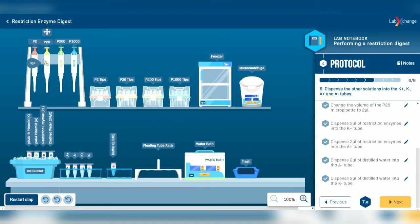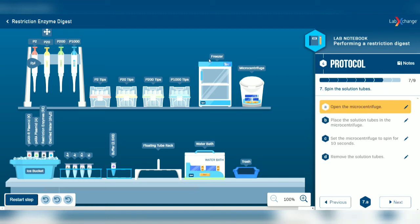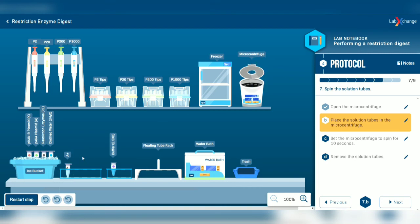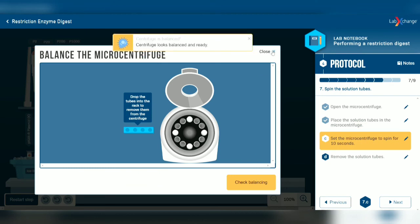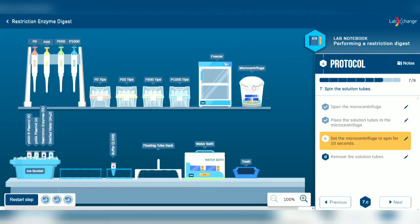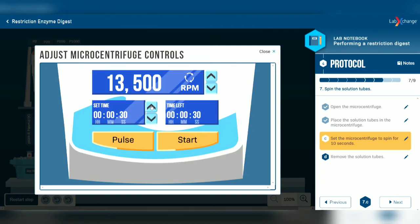Return the micropipette to the rack. Next, open the microcentrifuge and place the solution tubes into it. Always check the balance before starting the centrifuge to prevent damaging the machine. Close the microcentrifuge, set the timer for 10 seconds, and start.